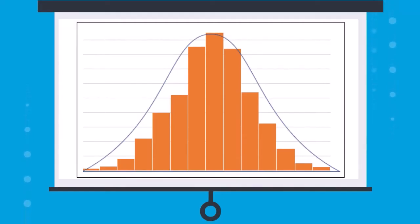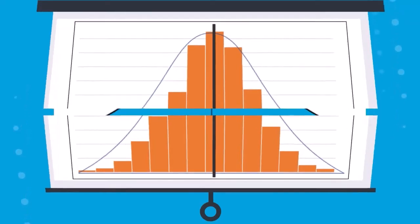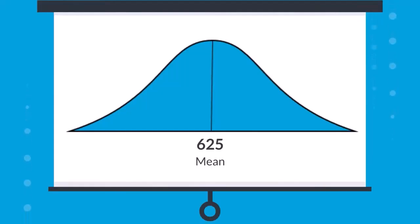In a normal distribution, the mean is at the center. In this case, the mean of these scores is 625, and the distribution is symmetrical. About half the scores are above the mean, and half the scores are below the mean.